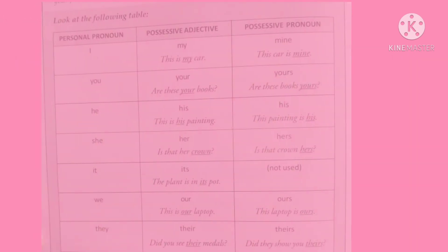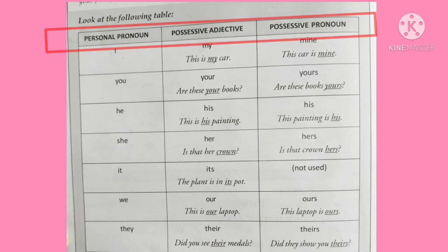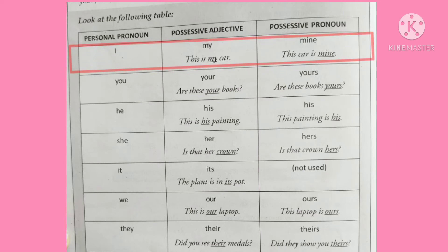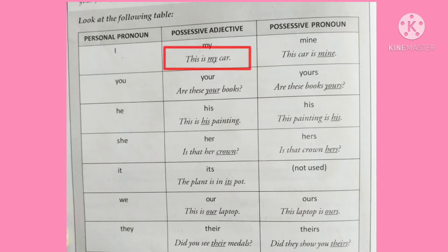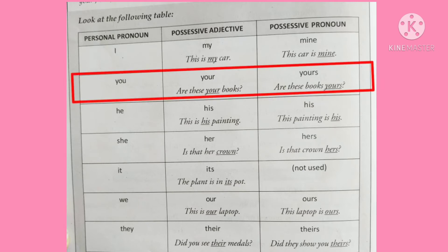Now look at this table — it will make it easier to understand possessive adjectives and possessive pronouns. There are three columns: personal pronouns, possessive adjective, and possessive pronoun. For personal pronoun 'I,' the possessive adjective is 'my' and the possessive pronoun is 'mine.' For example: 'This is my car' — 'my' is a possessive adjective used before the noun 'car.' 'This car is mine' — 'mine' is a possessive pronoun referring to the noun 'car.'